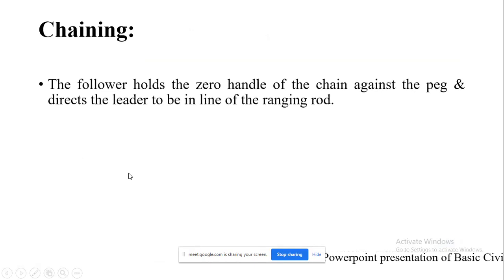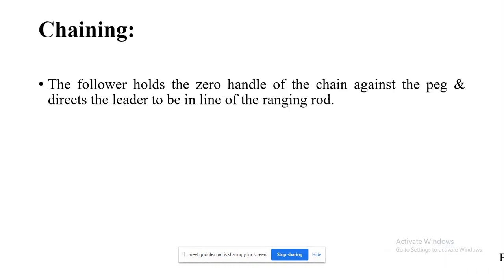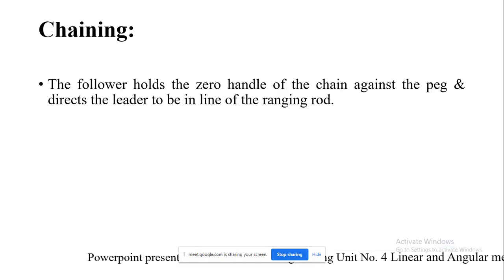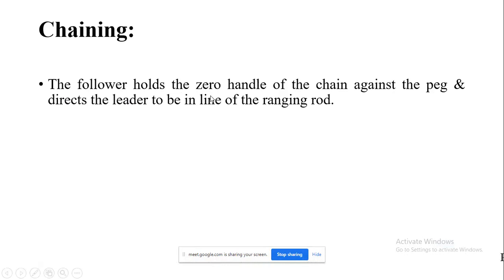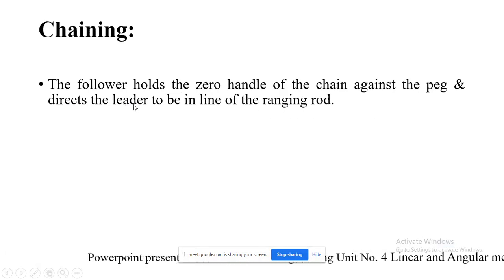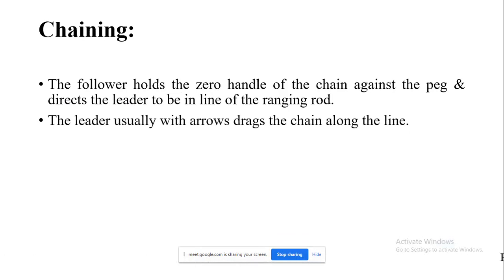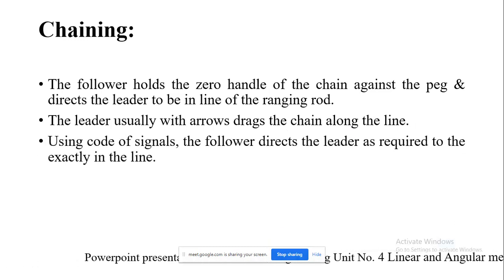In chaining, the follower holds the zero handle of the chain against the peg and directs the leader to be in line with the ranging rod. The leader, usually carrying arrows, drags the chain along the line, and using a code of signals, the follower directs the leader to be exactly in line.